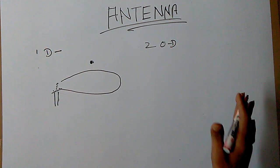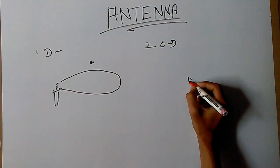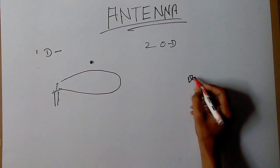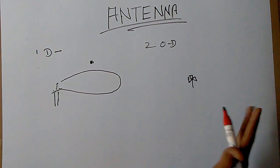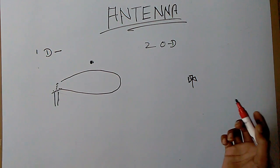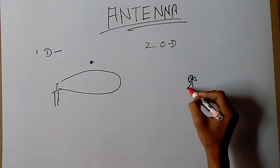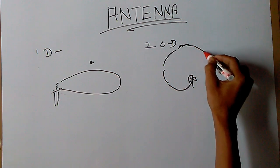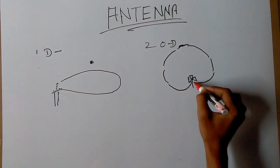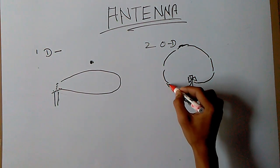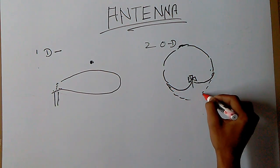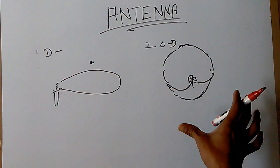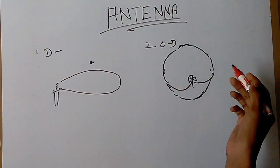The omnidirectional antenna creates a bubble of range around it — a spherical bubble that also extends backwards. So the signal radiates all around the antenna in every direction, forming a bubble of range that you could grab the signal from.